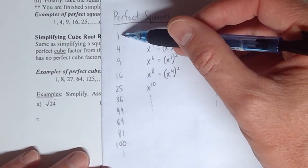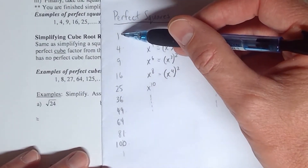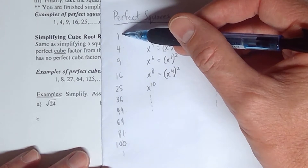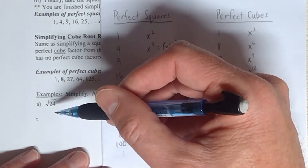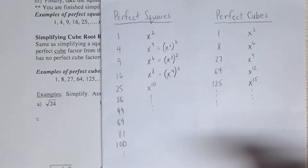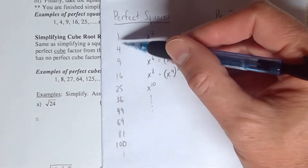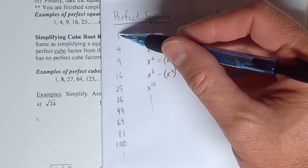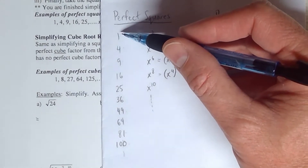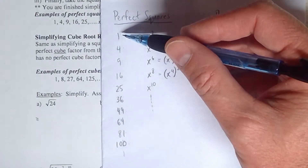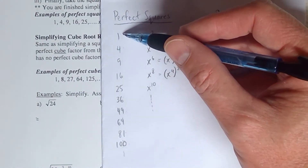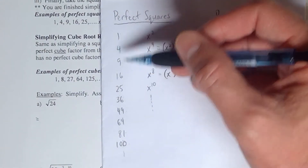You go through this list and ask which ones are factors of 24, then pick the biggest one — it has to be the biggest one in order to completely simplify the problem. Now, 1 will work with anything, but here's the problem: if you factor out 1, it's not going to change it at all. If you factor 1 out of 24, the 24 is still going to be there. The goal is to make the 24 smaller.